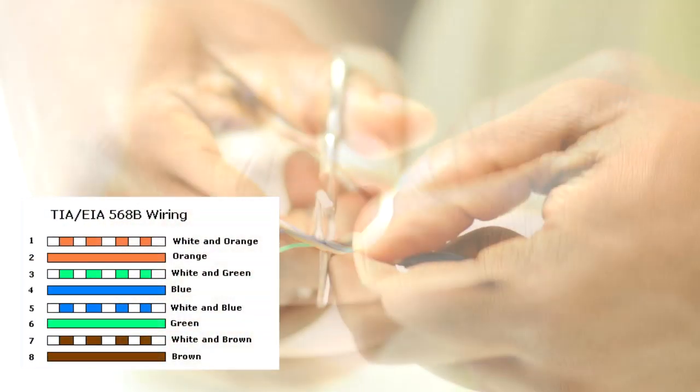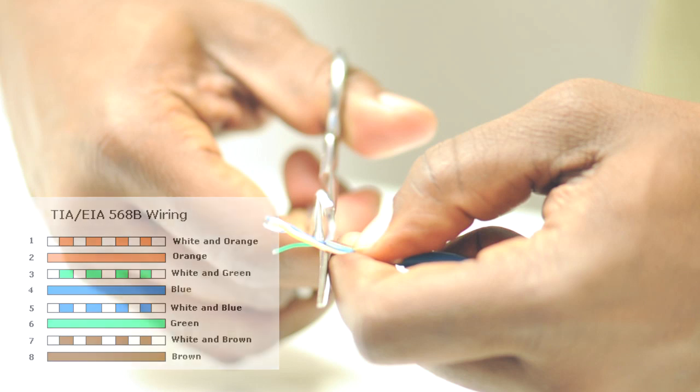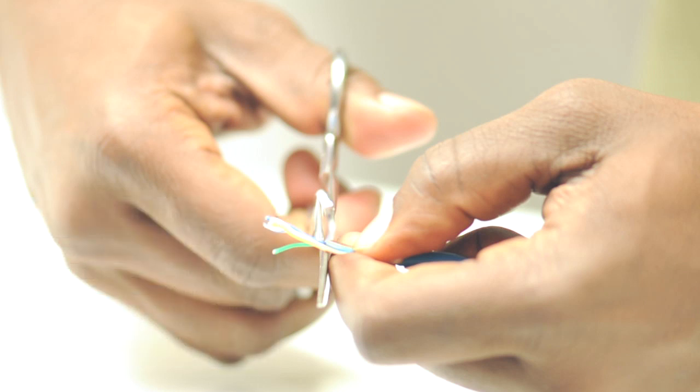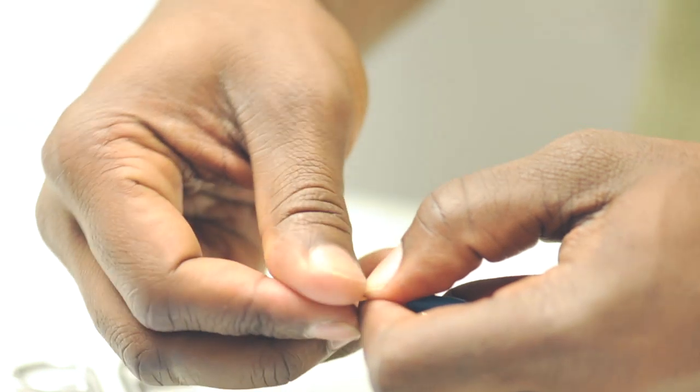Straighten out the wires and line them up according to the color code. For most standard applications, use the 568B coloring code. Then with my scissors, I can trim off the extra cable.